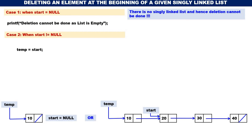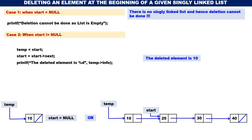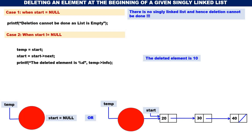After start = start->next, start contains the address of node 20, meaning we have moved start by one node. Before deleting, we also display: deleted element is temp->info, which is 10. Then the node pointed by temp must be freed because we don't require it — we have logically disconnected it, but physically we must delete it using free(temp). Whatever node is pointed by temp is freed. Finally, return start.